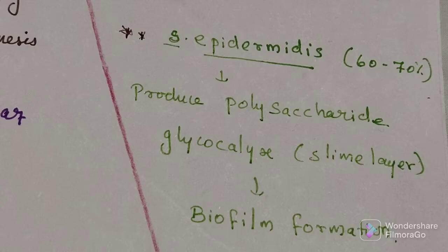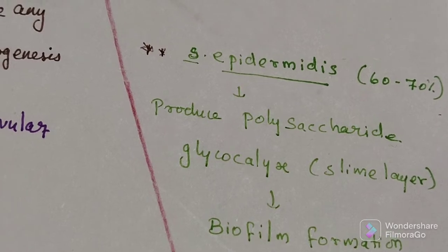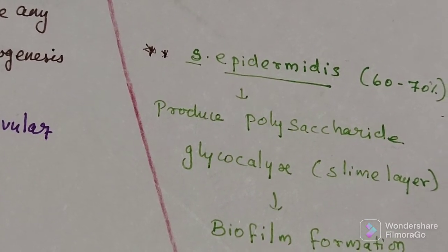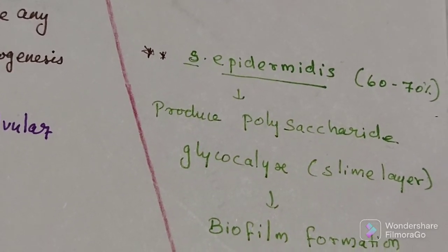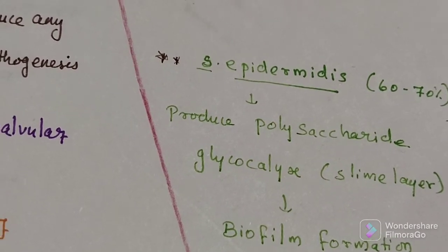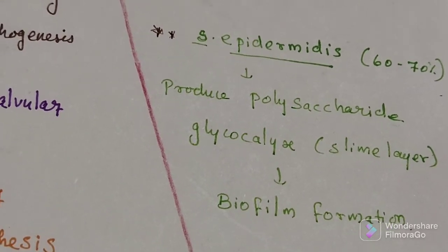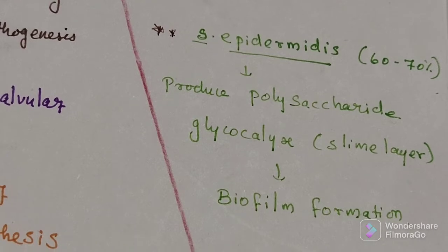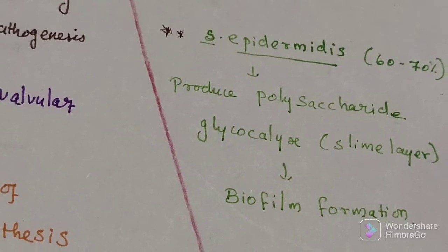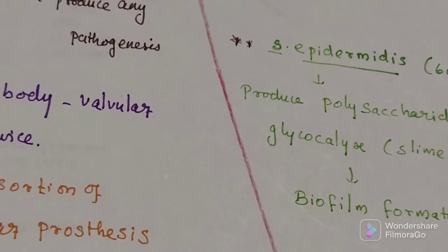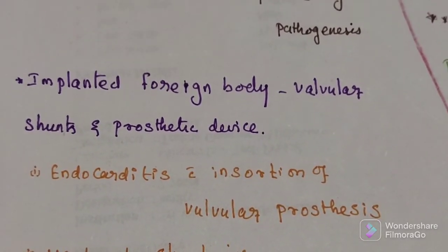Staphylococcus epidermidis is the normal flora. Coagulase-negative staphylococcus accounts for almost 60–70% as Staphylococcus epidermidis. They produce polysaccharide glycocalyx, which is nothing but a slime layer. This slime layer leads to biofilm formation. It acts as a foreign body and can adhere to any implanted foreign bodies like valvular stents and prosthetic devices.